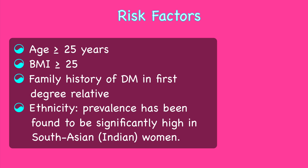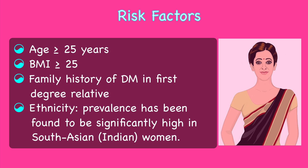The important risk factors for GDM are age greater than or equal to 25 years, obesity defined as BMI greater than or equal to 25, family history of diabetes mellitus in a first-degree relative, and ethnicity. Prevalence has been found to be significantly high in South Asian women.